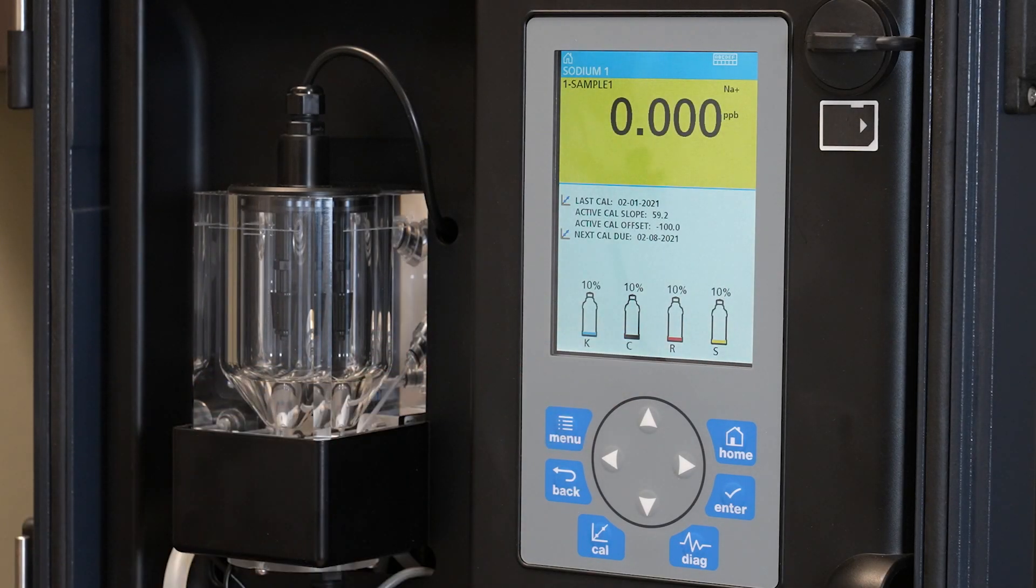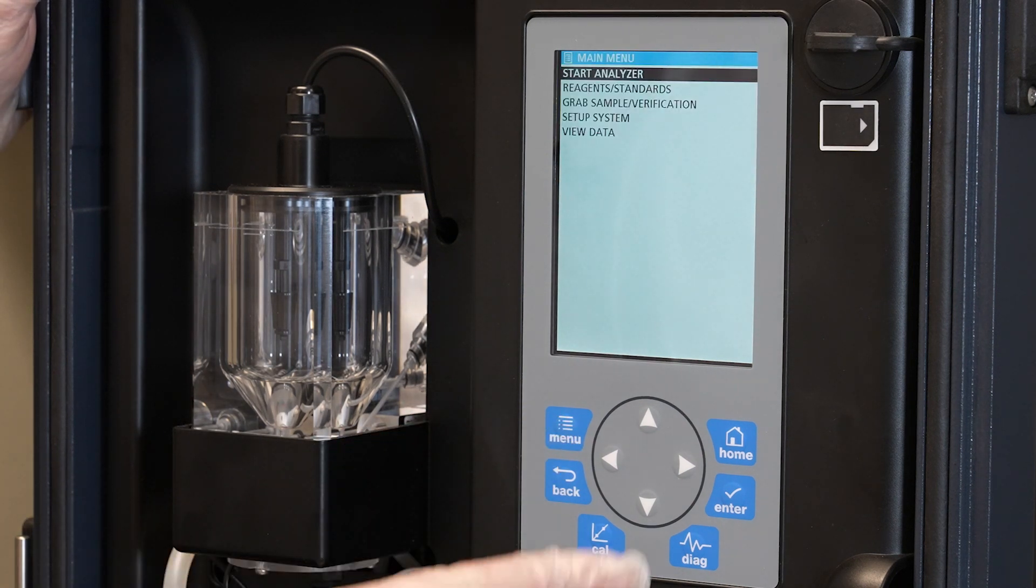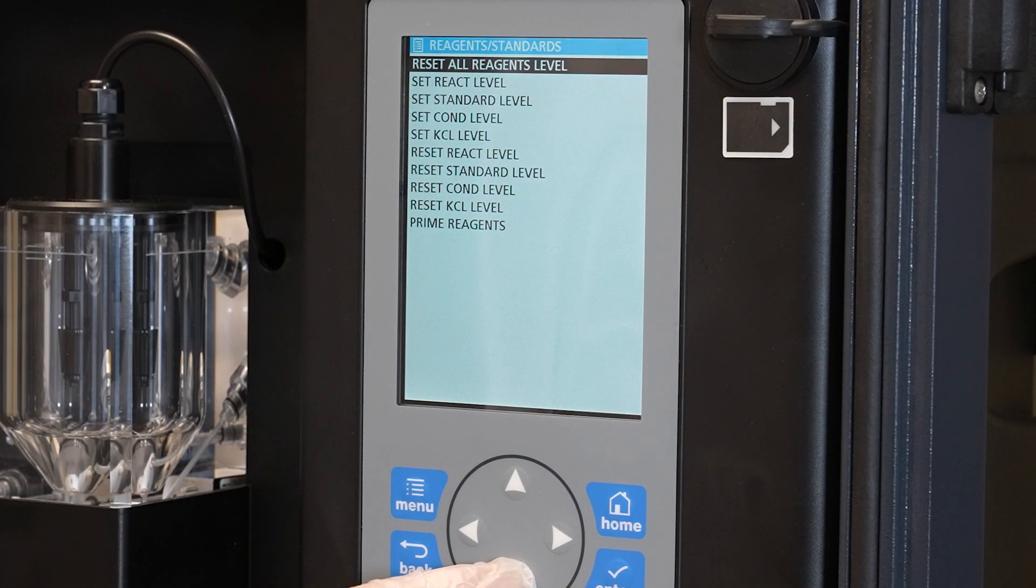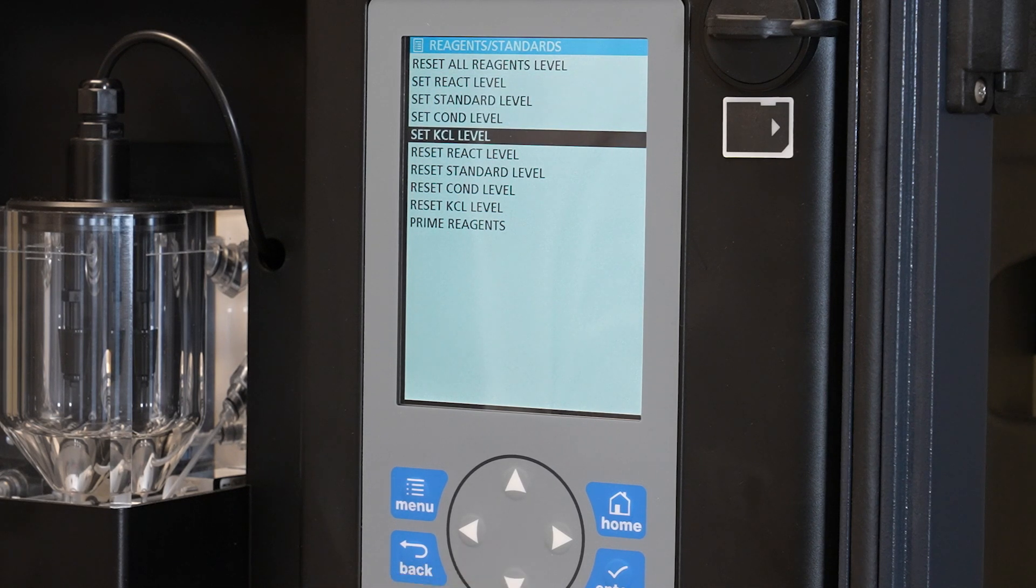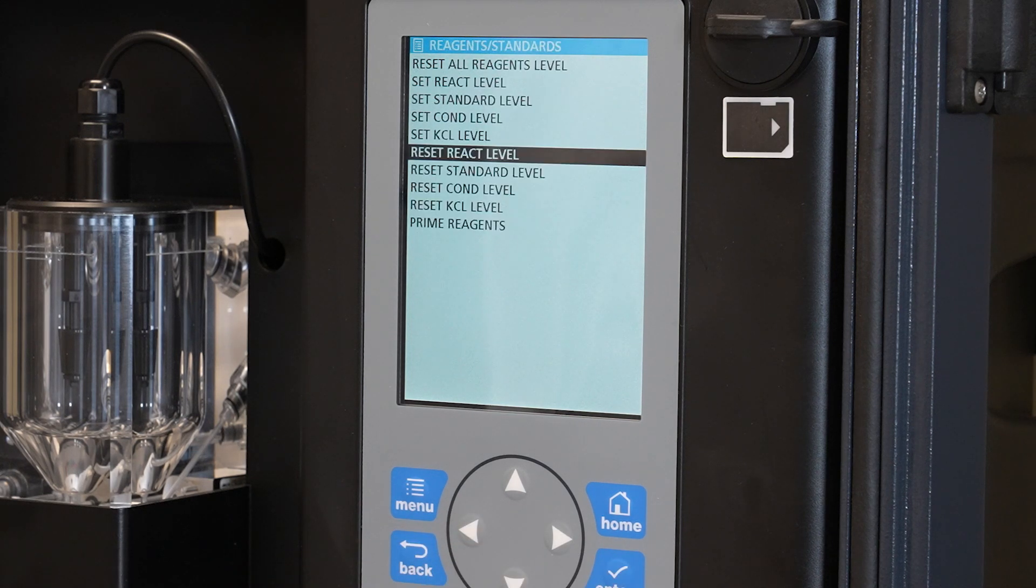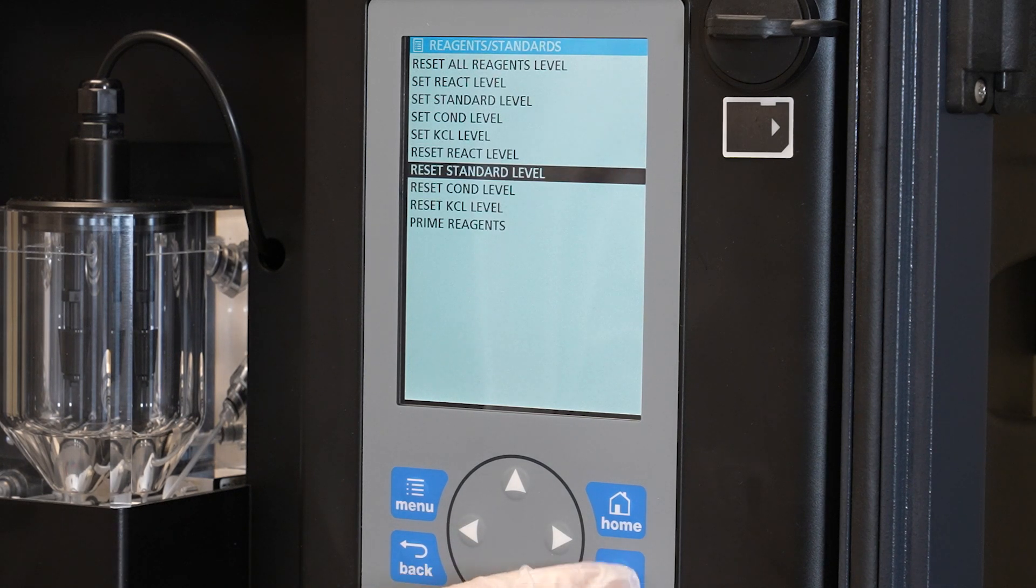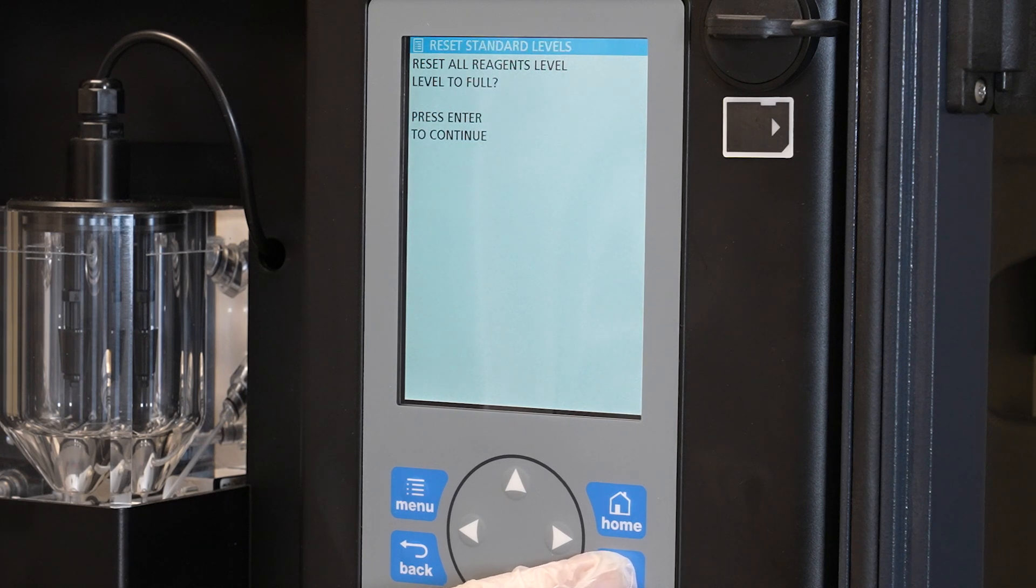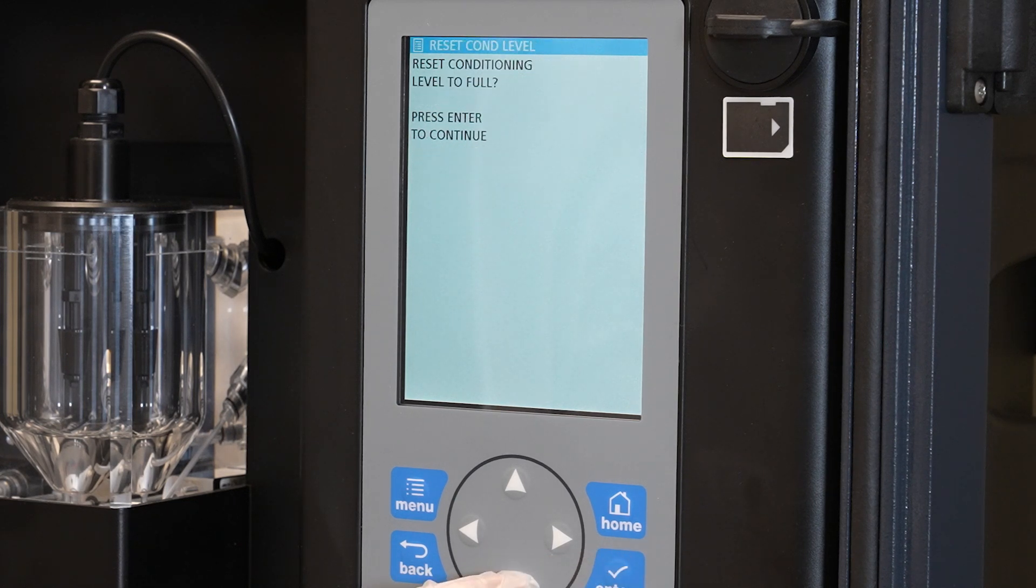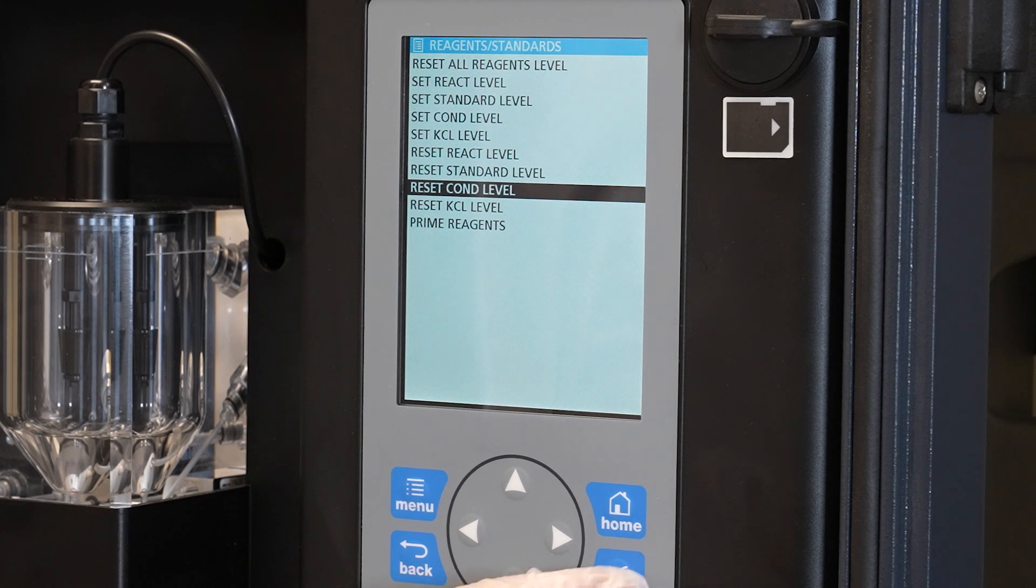Now we want to reset our reagent levels to a hundred percent since we've refilled them. So we go to menu and we scroll down to reagents and standards. Press enter. And now we're going to scroll down to reset our reagent levels. So the first one we'll reset is our reactivation solution. Press continue to enter. Now we'll set our standard level. Press enter to continue. And then reset our KCL.